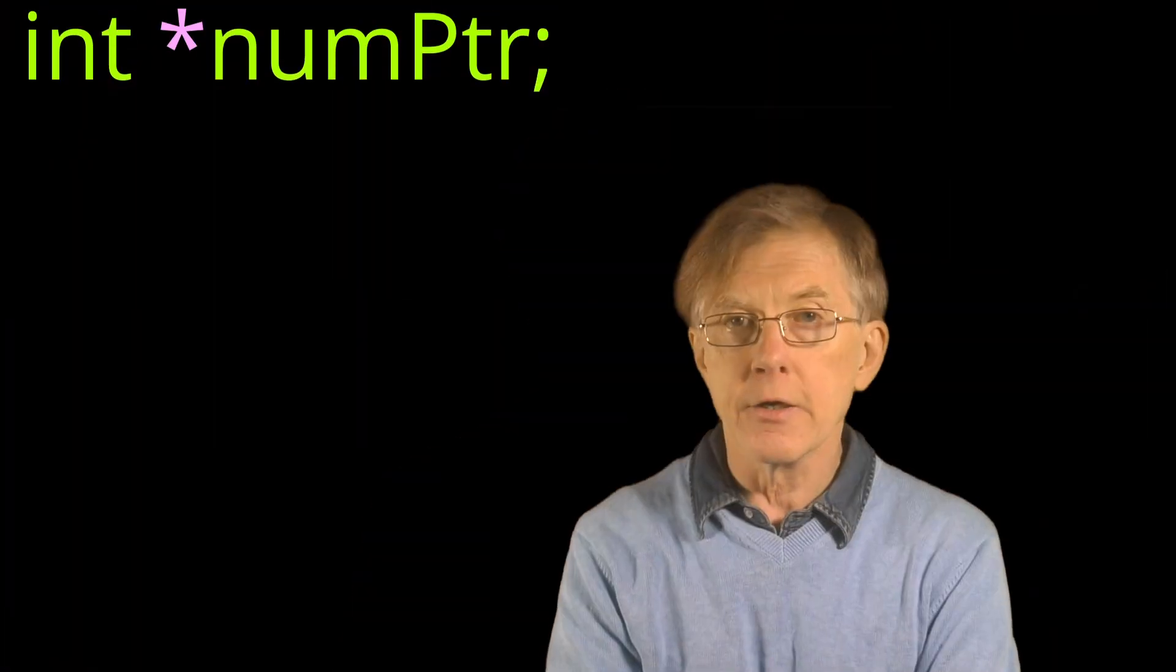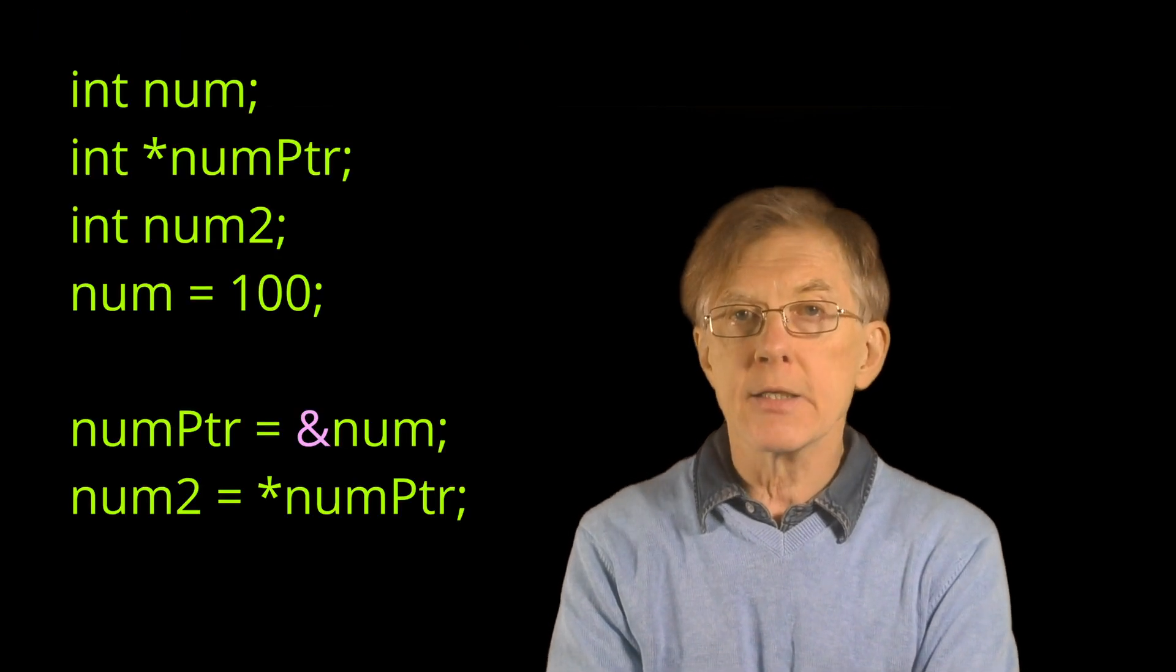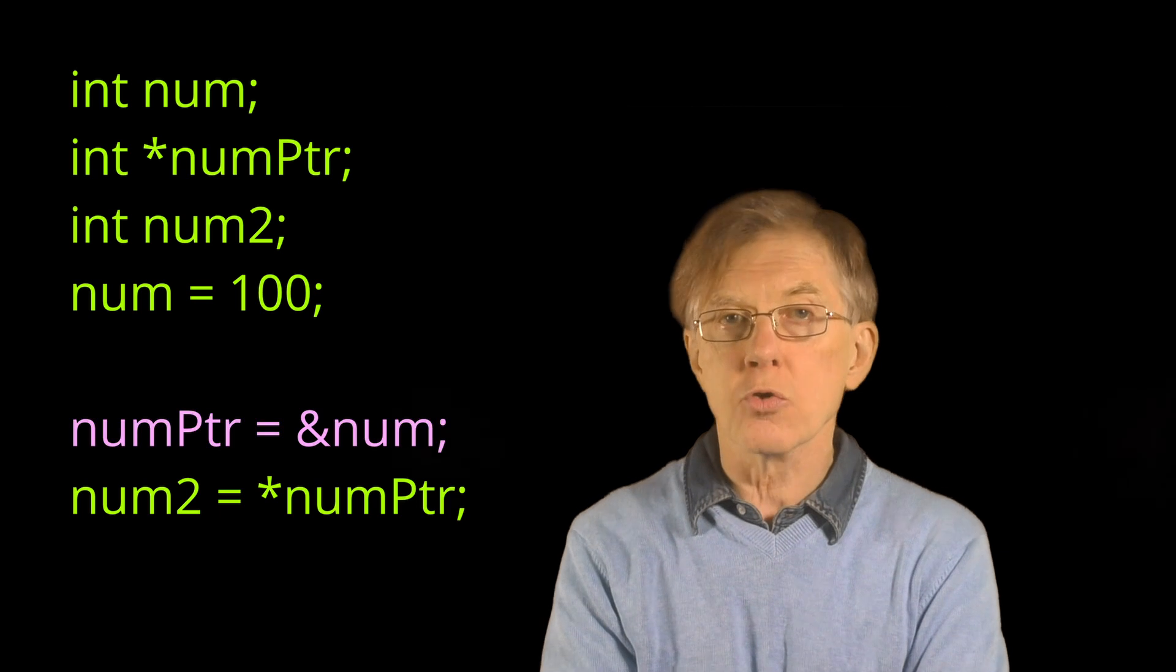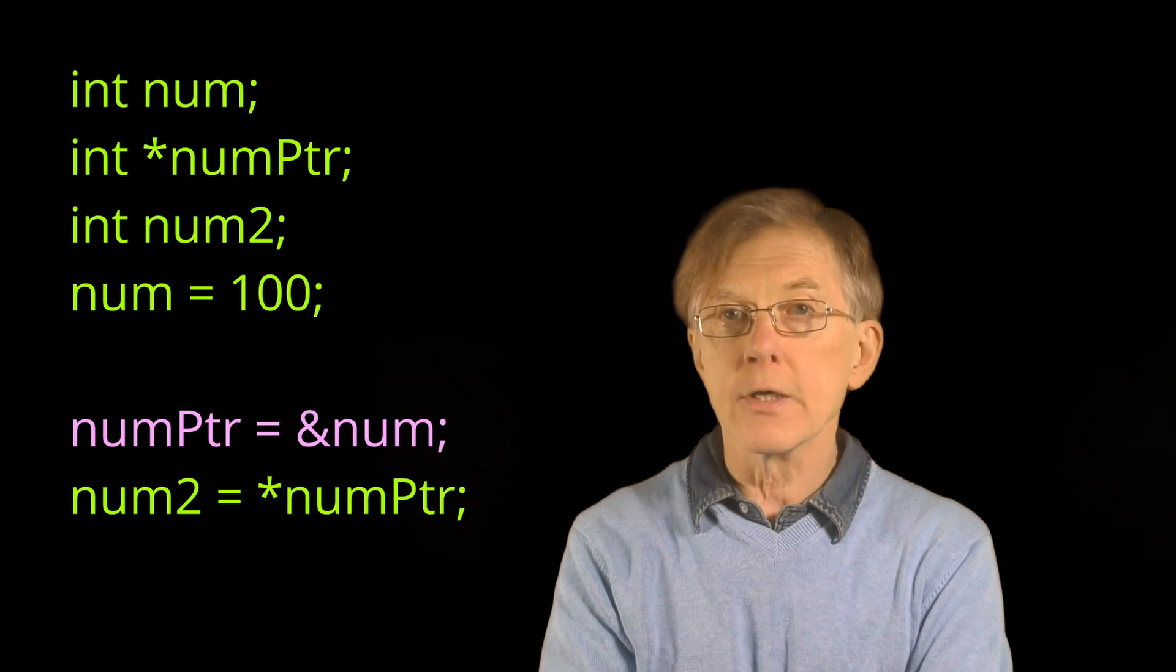In C, a pointer variable is indicated with an asterisk. Here, numptr is a pointer to an integer. Ampersand means address of, so numptr stores a number representing the address where the integer value of the num variable is stored.